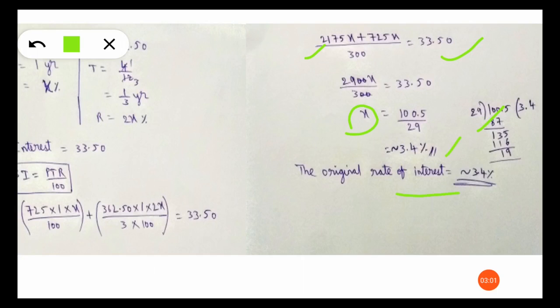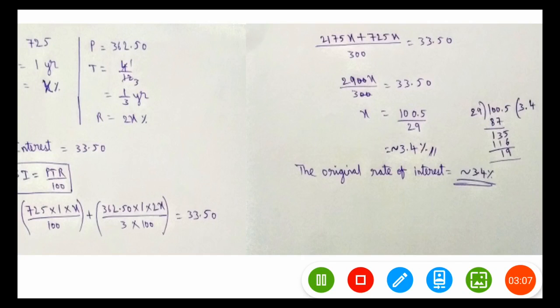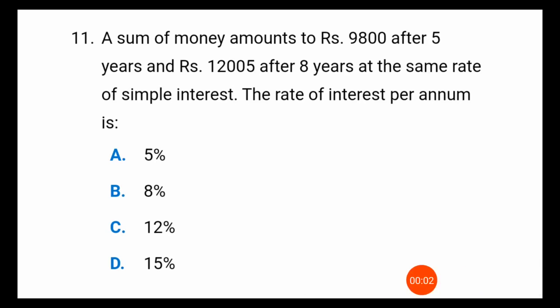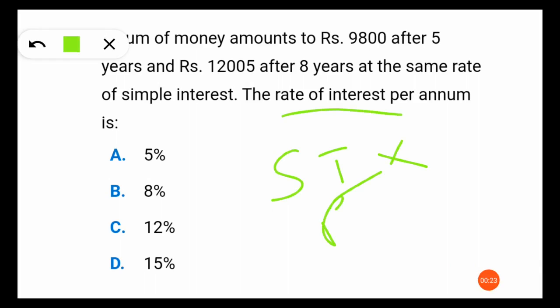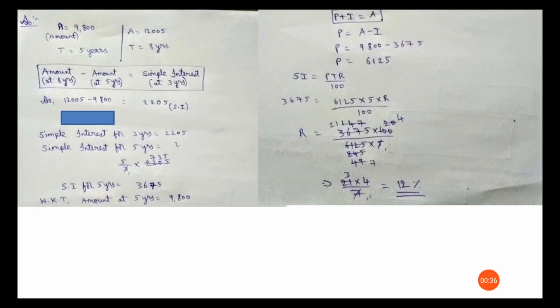So the original rate of interest is approximately 3.4 percent. Now let's move to the third question, which is very important and a bit tricky. The question is: a sum of money amounts to rupees 9800 after five years and rupees 12500 after eight years at the same rate of simple interest. The rate of interest per annum is to be found. Neither the simple interest nor the principal is directly given — only the amounts are given.